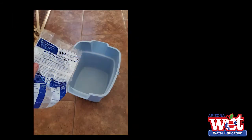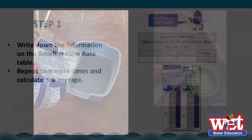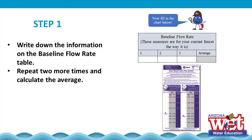Empty the water into a bucket or a large container for later use. Write your findings on the baseline flow rate table found on your booklet under step 1. Repeat the procedure two more times, write your results, and calculate the average. This will give you the average flow rate.